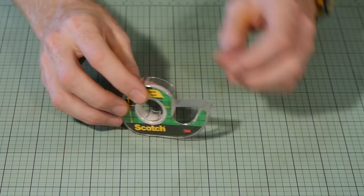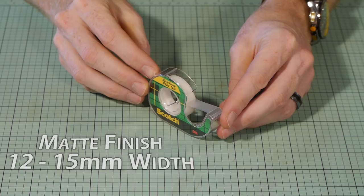The main structure of the hay bale will be sticky tape. When it comes to selecting a tape, I've found the best type is tape that has a matte finish and approximately 12-15mm wide.